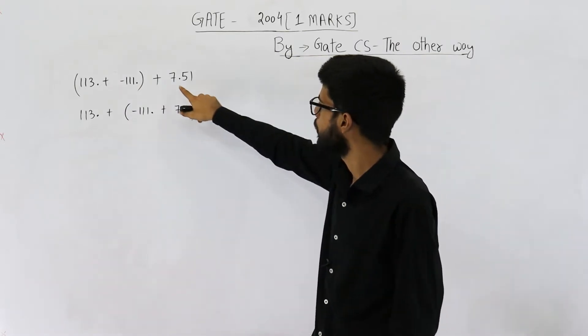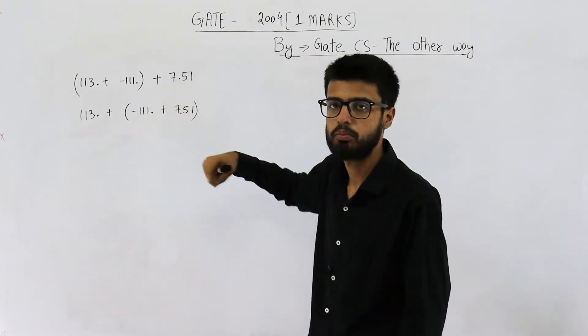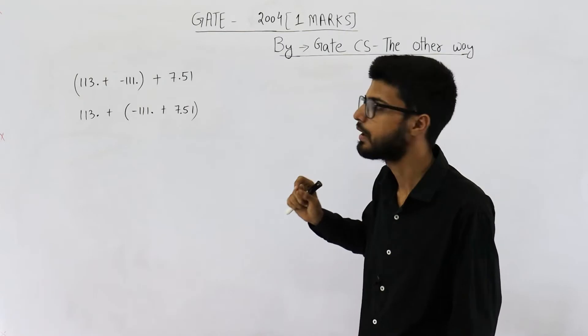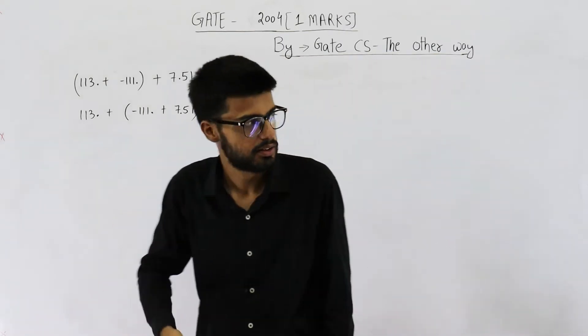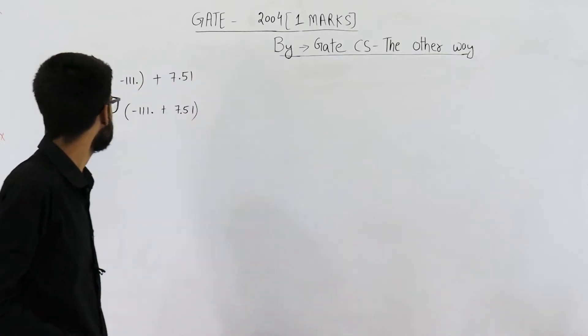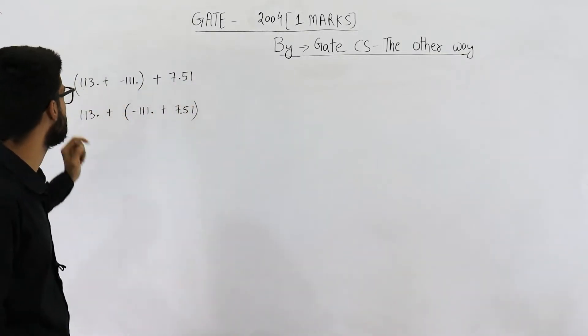That means you need not convert these numbers into binary. We can work in decimal number system only because this word three digit is used. Step one, let's see how will they be represented.